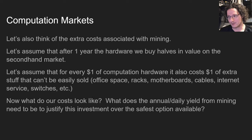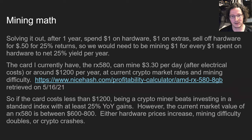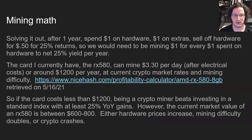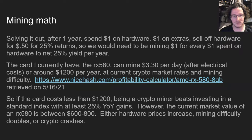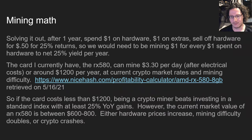If we're going into the mining market, we're looking for 25% year-over-year growth on our investment. After a year, we spend a buck on hardware, a buck on extras, and then sell off the hardware for 50 cents. So we'd need to be mining a dollar for every dollar spent on hardware. The card I currently have, the RX 580, can mine $3.30 per day after electrical costs, or around $1,200 per year, at the current crypto market rates and mining difficulty as of May 16th. So if the card costs less than $1,200, being a crypto miner beats investing in a standard index with at least 25% year-over-year gains.